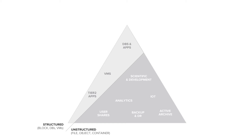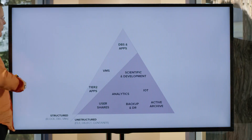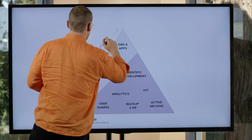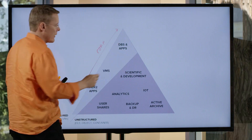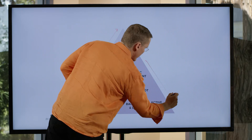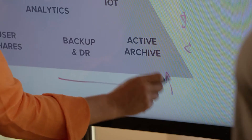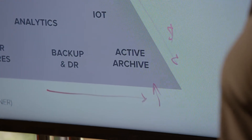At Pure, we like to think about the data universe in a very simple abstracted triangle where the world is split into structured and unstructured data use cases. Structured tends to be block-type use cases like VMs and databases. Unstructured tends to be things like analytics, big data, and backup and archive. Typically as you go up this triangle, you increase in the needs of performance — things like latency and IOPS. As you go down, you tend to have a need to reduce the cost per gigabyte, and as you go to the right, you see higher and higher scale and capacity of storage solutions.